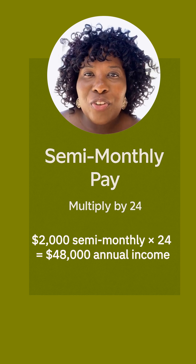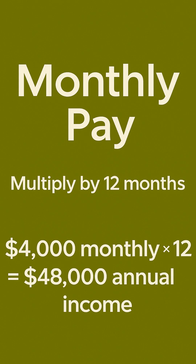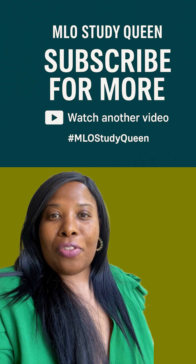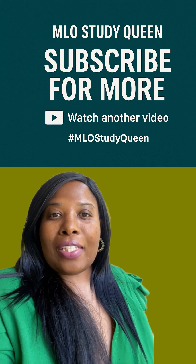For monthly pay, the formula is simple — multiply by 12. Example: $4,000 monthly times 12 equals $48,000 annual income. That's it. Monthly pay always annualizes to 12 months. Master this formula and you'll save time and points on your exam.